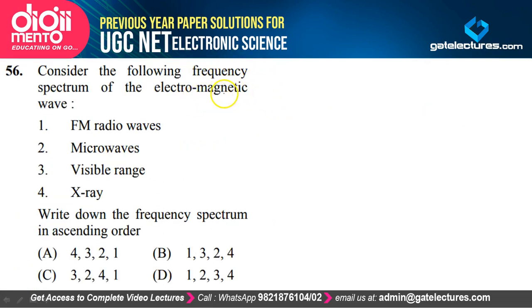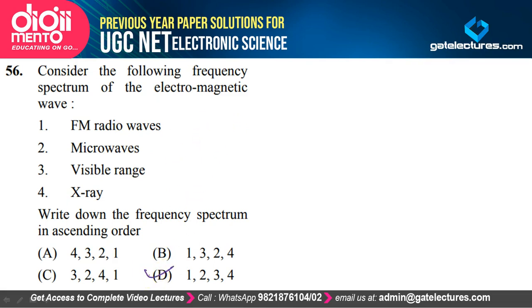Question 56: Arranging FM radio waves, microwaves, visible light, and X-rays in ascending order of frequency — option D is the correct option. This does not require detailed explanation.